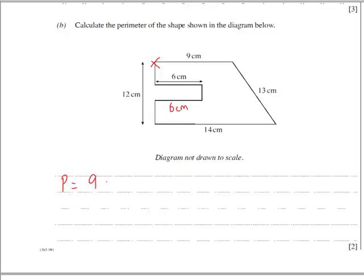the perimeter is equal to 9 plus 13 plus 14 plus 6 plus 6, and this dimension of 12 here accounts for these three sides all together. So we can add 12 on.